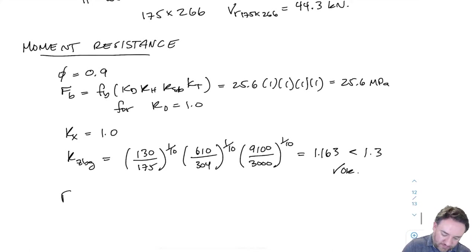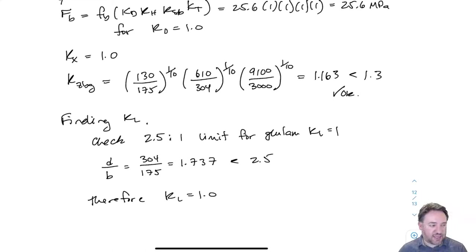Now what about KL? Well, for glulam, we have a 2.5 to 1 limit. And if my aspect ratio is within the 2.5 to 1 limit, then I can just say right away that KL equals 1, which it is in this case. And therefore, KL equals 1.0 for this problem.